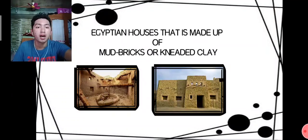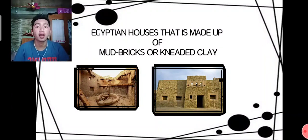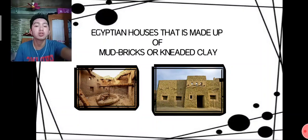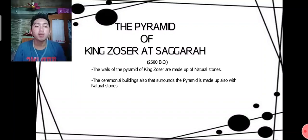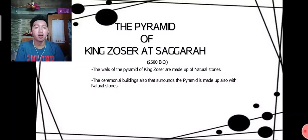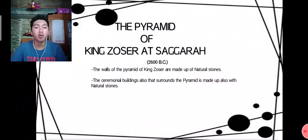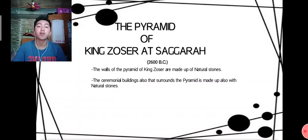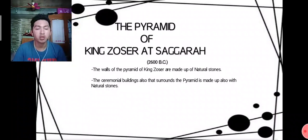Egyptian houses were made of mud bricks or kneaded clay. The Pyramid of King Djoser at Saqqara, dated to 2600 BC, had walls made of natural stones. Natural stone was their primary building material. The ceremonial buildings surrounding the pyramid were also made of natural stones.